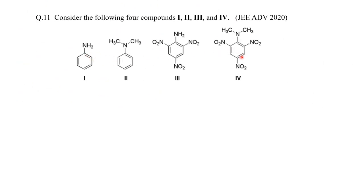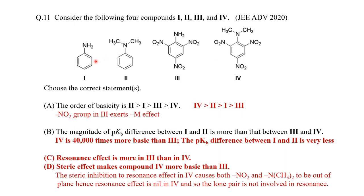Now let us go back to the question. Among the 4 molecules, the 4th molecule is the most basic. The order is: structure 3 is the least basic, then structure 1 (aniline), then structure 2 (NN-dimethylaniline), because tertiary amine is more basic than primary amine, and three electron-withdrawing nitro groups prevent nitrogen from donating in structure 3. We would expect structure 4 to come between 1 and 3, but since 4 does not show resonance at all, it behaves like an aliphatic amine and is the most basic.